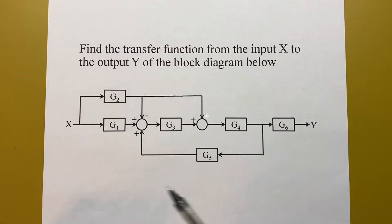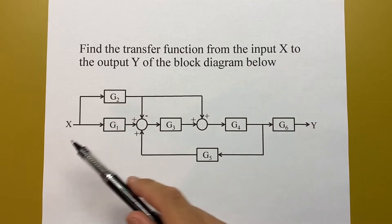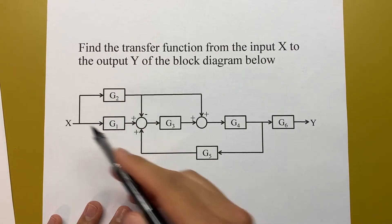The problem is find the transfer function from the input X to the output Y. What I do to start this sort of problem is label all of the signals. The signals of course are just the arrows, so this is already labeled X.